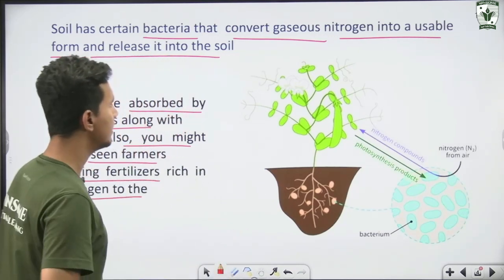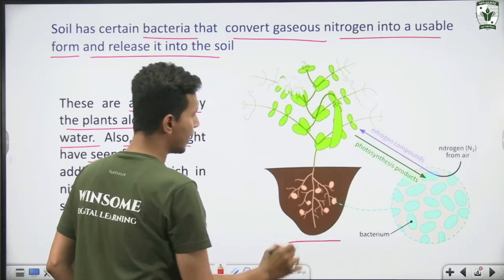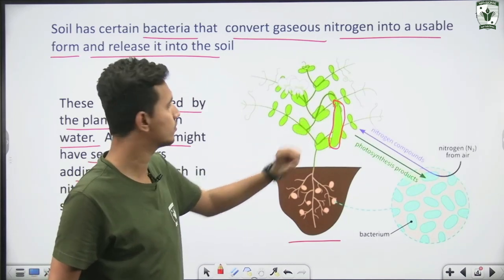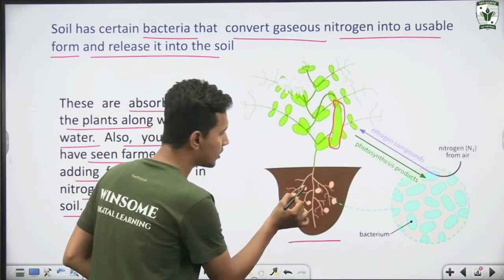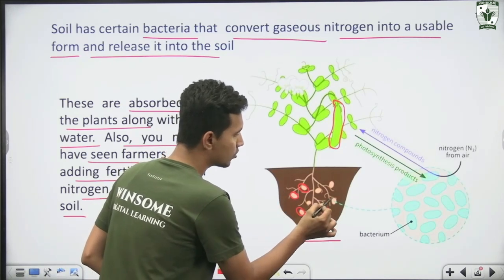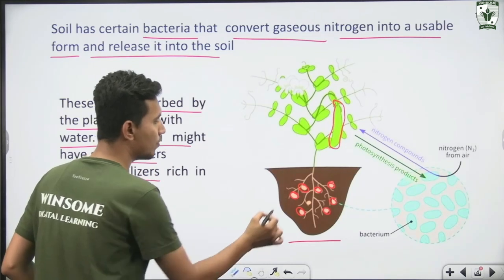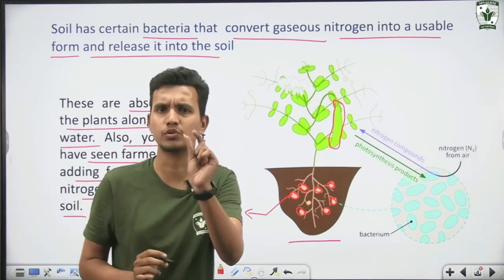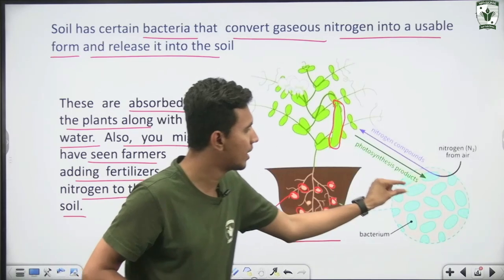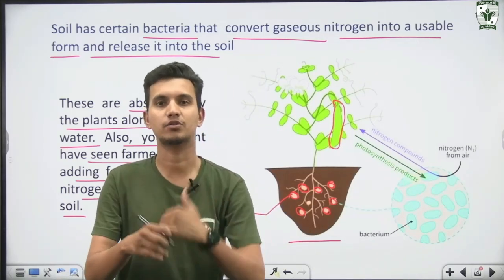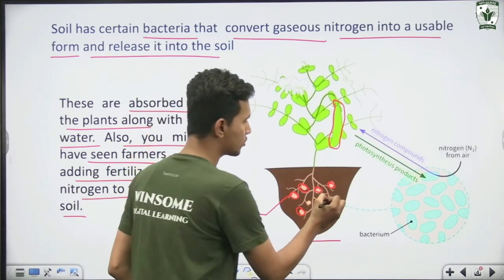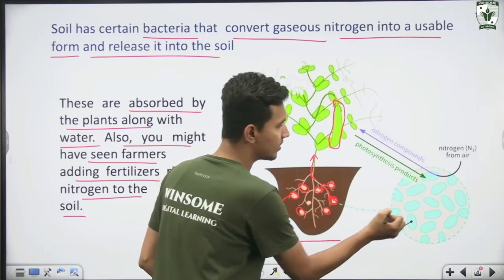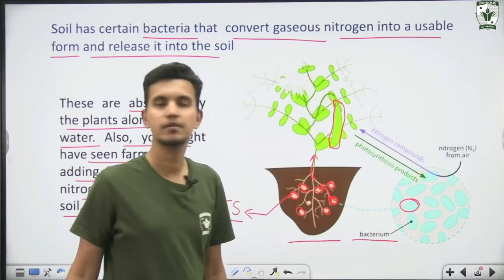In leguminous plants you can see small structures on the roots called nodules. These nodules contain bacteria that help with nitrogen fixation.